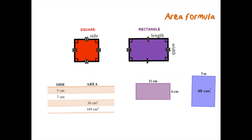To calculate the area of a square, you say side multiplied by side. A square does not have a length and a width because both sides are the same, so we call them side times side, which can also be written as side squared. For a square with side lengths of 5 centimeters, that's 5 times 5 which gives 25 centimeters squared. For a side of 7, that's 7 times 7 which gives 49 centimeters squared.